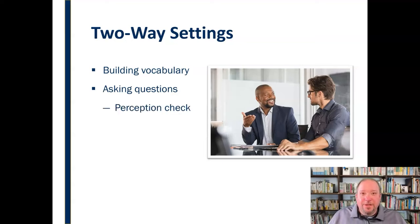One very specific way we can do that is through a perception check. We talked about a perception check in a previous video on perception, this idea of describing the behavior. These three steps: describe the behavior, then provide two possible interpretations of that behavior or the meaning of what that person is saying, and then ask for clarification. So we can perform a perception check, and you can go back and review how to do that.